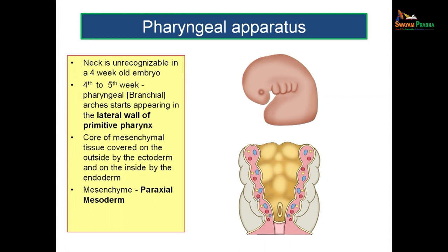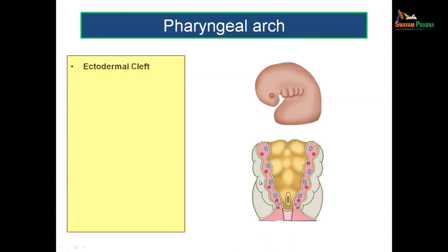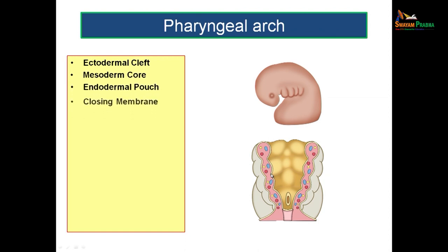What about the mesenchymal portion — which mesoderm do you have here? This is the paraxial mesoderm which you get in the mesenchymal portion. What do you mean by ectodermal cleft? What do you mean by mesodermal core? What do you mean by endodermal pouch and what do you mean by closing membrane? All these are components of the pharyngeal apparatus. You have pharyngeal arches — six pairs from either side meet in the midline to form U-shaped pharyngeal arches. The outer covering is ectoderm, the inner lining is endoderm, and the intermediate region is mesoderm.